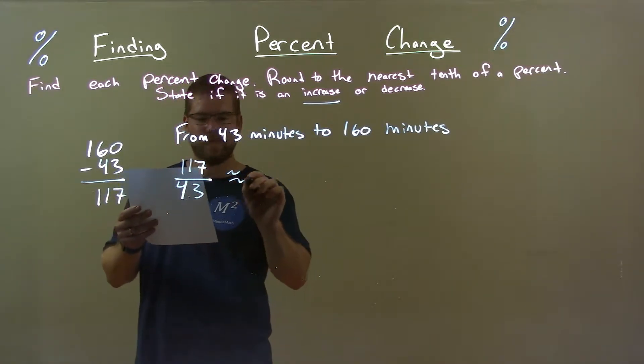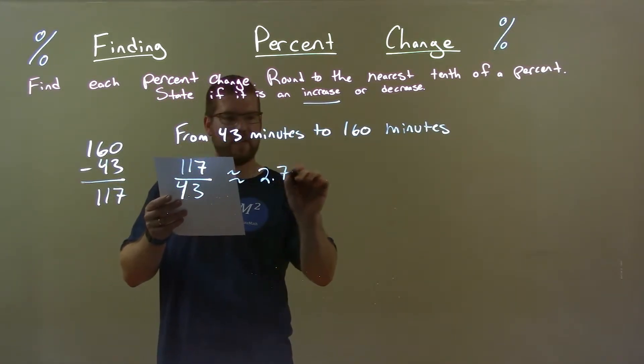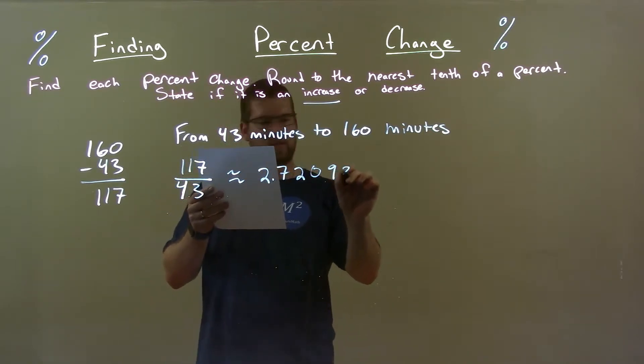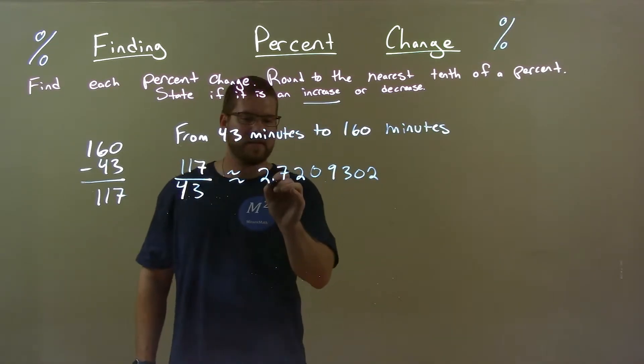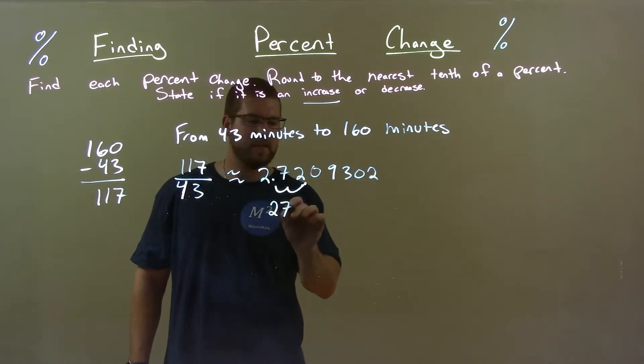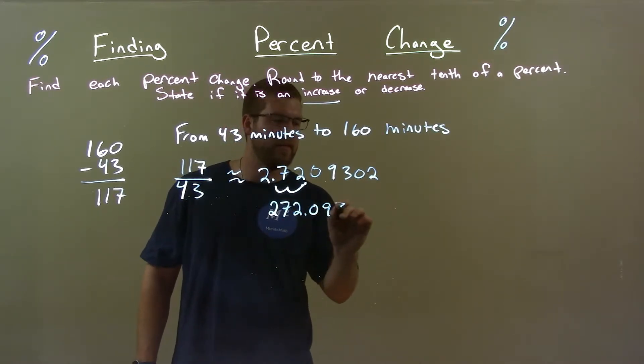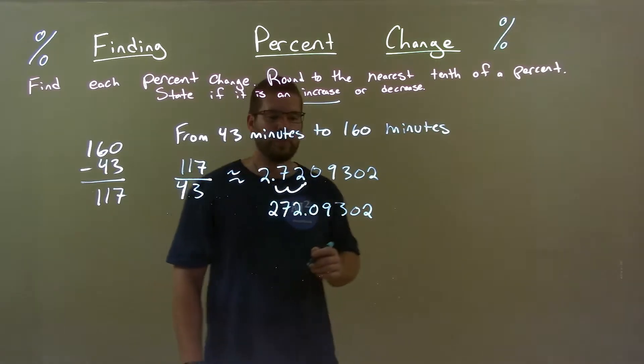That gives us 2.7209302. Now write that as a percent. Move the decimal place two spots to the right. It gives me 272.09302%.